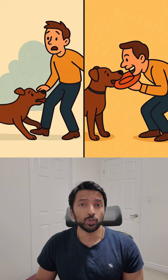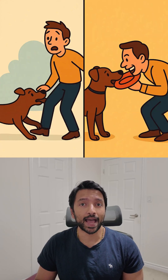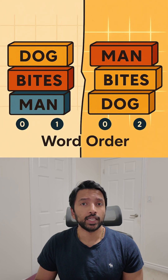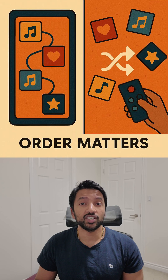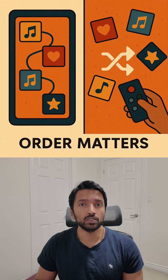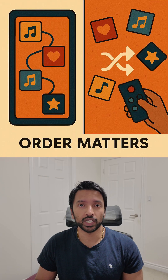How does ChatGPT know the difference between 'dog bites man' and 'man bites dog'? They use the same words but not the same meaning. The trick: positional encoding. Imagine a playlist with your favorite songs — shuffle it, you lose the story. Same with sentences.